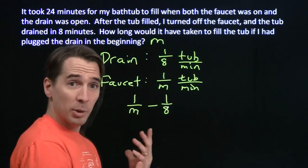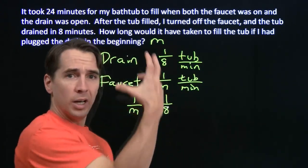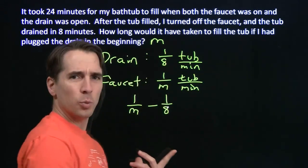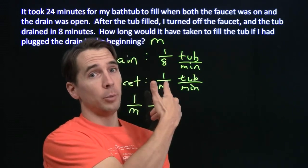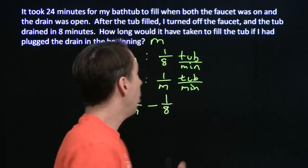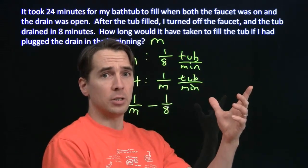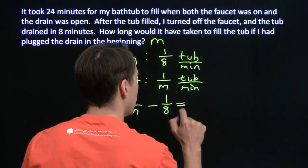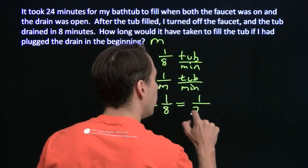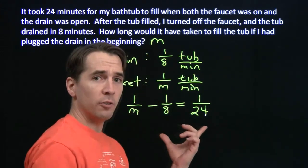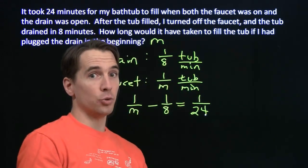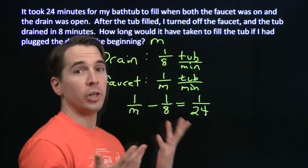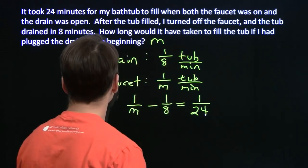So, together, they do one over m of the tub fills, one-eighth of it empties. So that's how much work they do together. And we know what they do together. Together, they'll fill the whole tub in twenty-four minutes. So if they're both on, the faucet's on, the drain is open, we still fill one twenty-fourth of the tub every single minute when the faucet's on and the drain is open, because the whole tub fills in twenty-four minutes when the faucet's on and the drain is open.